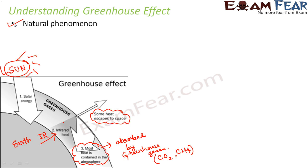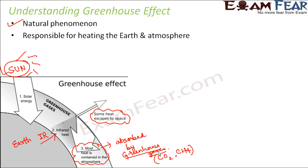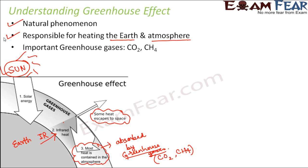The greenhouse effect is a natural phenomenon — it cannot be made to occur artificially, it just happens on its own due to the presence of greenhouse gases, carbon dioxide and methane, in the atmosphere. If these gases did not exist, the greenhouse effect would not take place because there would be nothing to absorb the infrared radiation. The greenhouse gases are responsible for heating the Earth and the atmosphere by trapping infrared radiation, which increases the Earth's temperature.